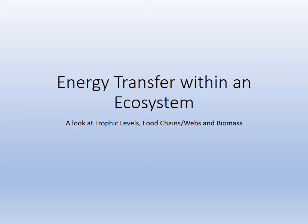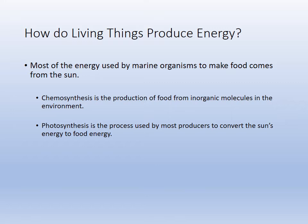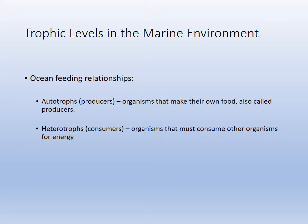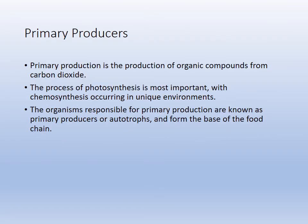Now we look at energy transfer: food chains, food webs, and biomass. Chemosynthesis, used in vent communities, uses chemicals to split carbon dioxide and recombine it into glucose. Light is used in photosynthesis. Those are the two chemical reactions that produce carbohydrates powering our food chains. Autotrophs — also called producers — do this. Heterotrophs depend on autotrophs and must consume other organisms. Primary producers change carbon dioxide to carbohydrates and are the base of the food chain.